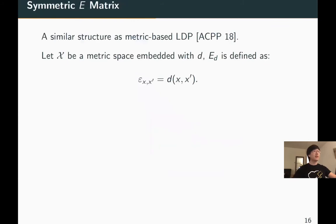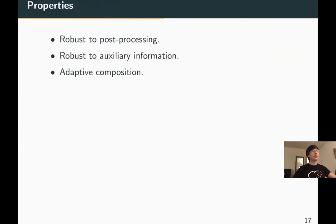For symmetric E-matrices, our framework introduces a similar structure as metric-based LDP. Suppose X is a metric space embedded with a metric d, then the privacy level between x and x' is defined as the distance between two elements. The privacy notion requires that it is harder to distinguish between elements that are closer in the embedded metric. The notion also satisfies several properties we want, including post-processing, robustness to auxiliary information, and adaptive composition.